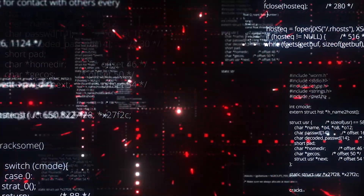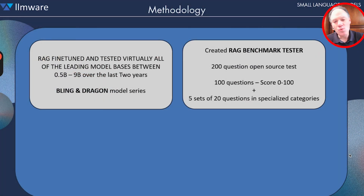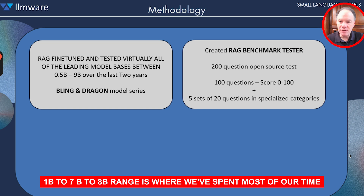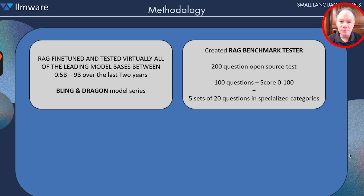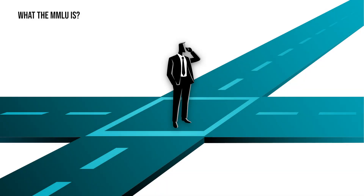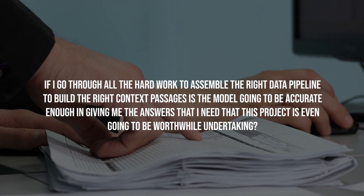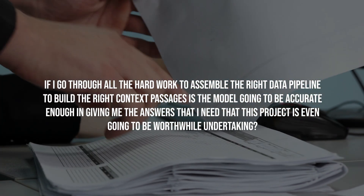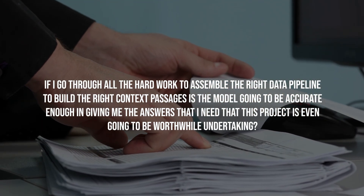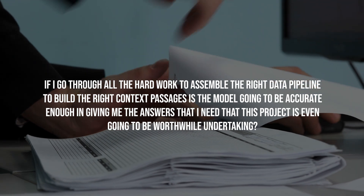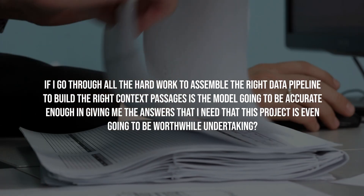We've gone all the way above 9 billion, but the sweet spot for us is in that 1 billion to 7-to-8 billion range, where we've spent most of our time. After fine-tuning these models, the questions we would always get from clients and partners were: 'I don't know what MMLU is, I don't know what any of these other academic benchmarks are. How accurate is this going to be? If I go through all the hard work to assemble the right data pipeline and build the right context passages, is the model going to be accurate enough that this project is even going to be worthwhile?'